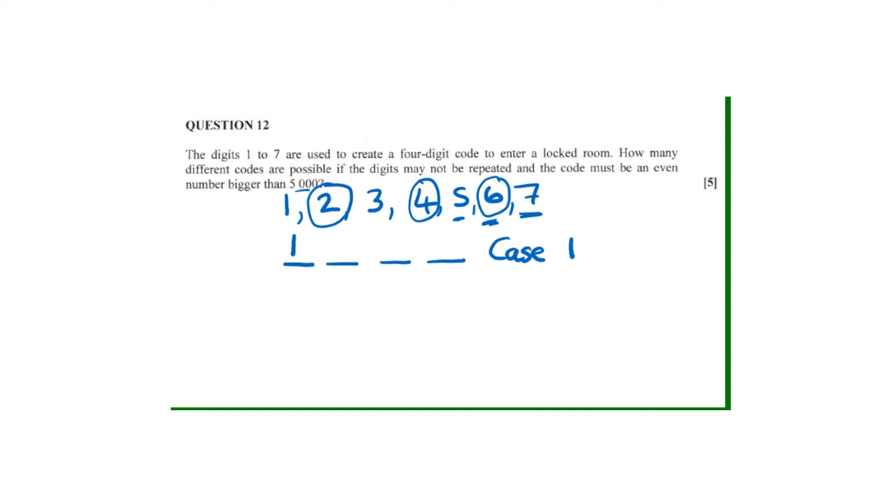Then which means on the last position we only are left with two options: either it will end with a 2 or it will end with a 4. So which means on the last position we have two options. So all in all, it means we have used only two digits and repetition is not allowed, which means here we can now put a 5.